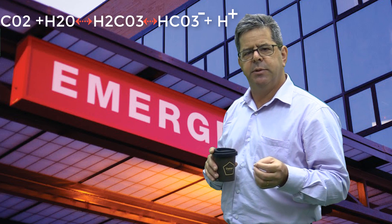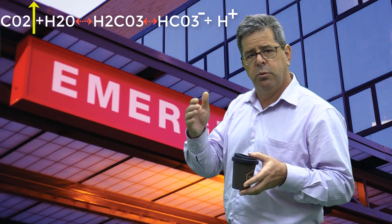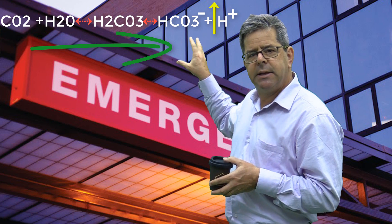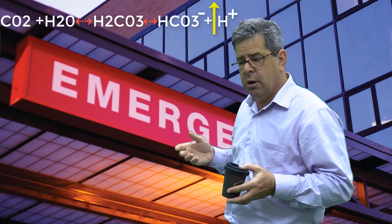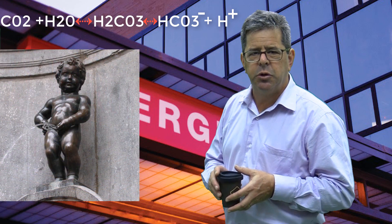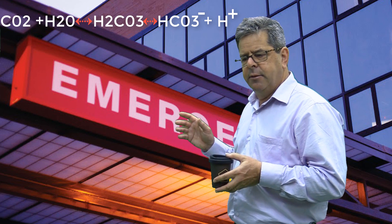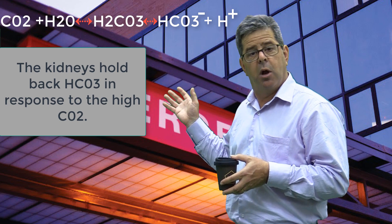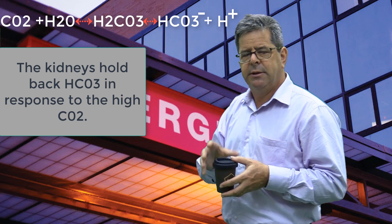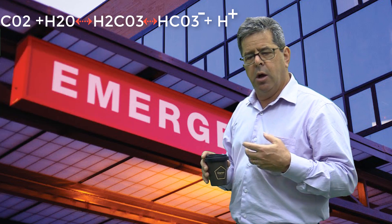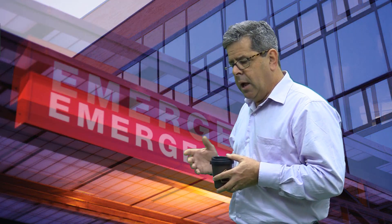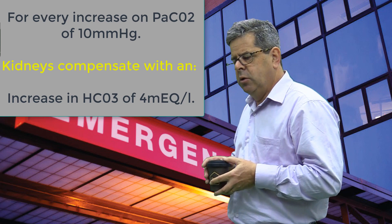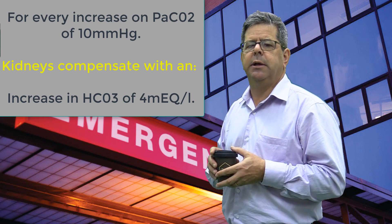With respiratory acidosis, high CO2 pushes the equation to the right, forming H+. The kidneys respond by holding back bicarbonate to oppose that acidosis, but it takes a number of days to occur — that's why it's called chronic compensation. For every chronic increase in CO2 of 10 mmHg, you get about 4 mEq/L of bicarbonate retained.